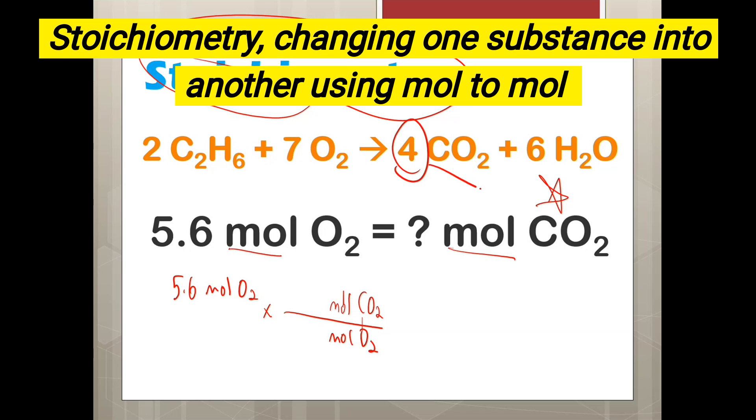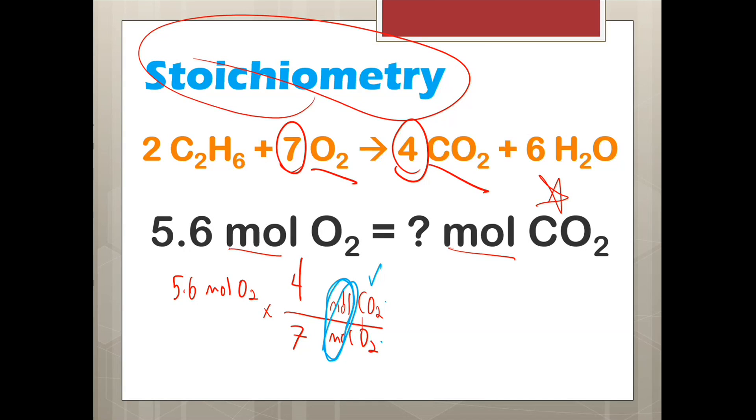So, for here, it says there are four CO2s for every seven O2s. So, when you do mole to mole, you need to use the chemical equation you're given. And we go mole to mole specifically to change our identity from one thing to another. So, instead of focusing on oxygen, I'm now going to be focusing on carbon dioxide.